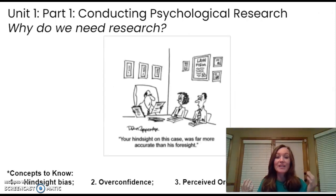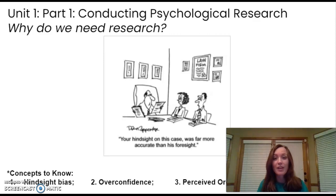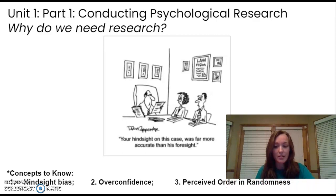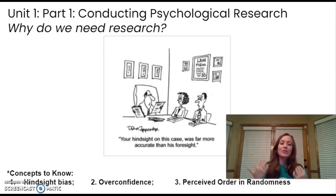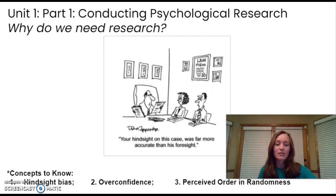Why do we need to rely on research? If psychology studies things like personality, memory, and perception, can't we just rely on our own intuition? The short answer is no. There are three pitfalls we are susceptible to as humans — we just can't trust our gut. Those pitfalls are hindsight bias, overconfidence, and perceived order in random events.